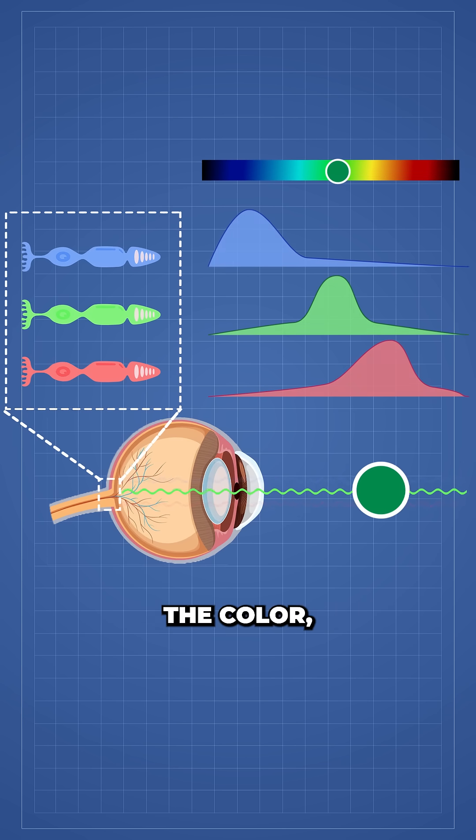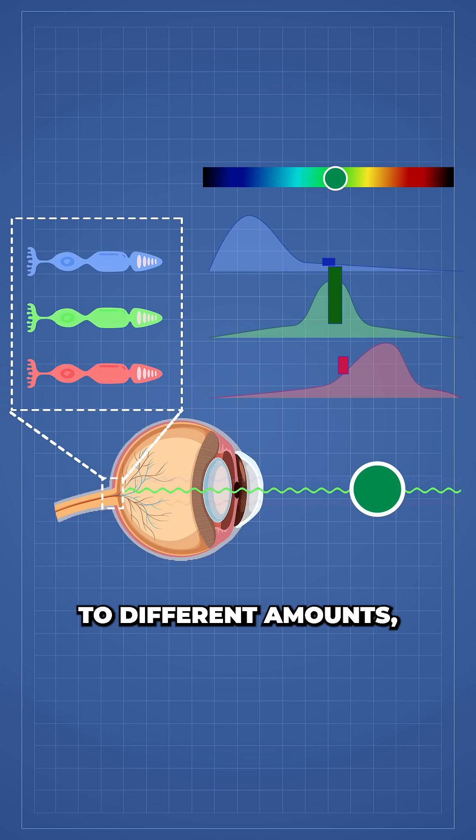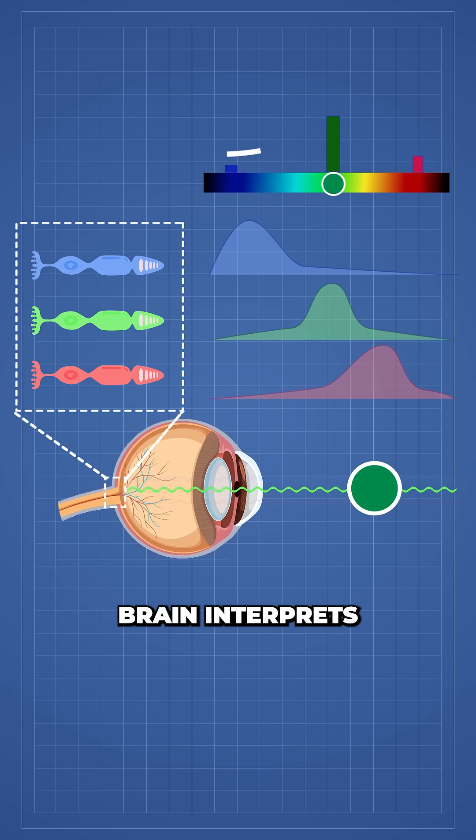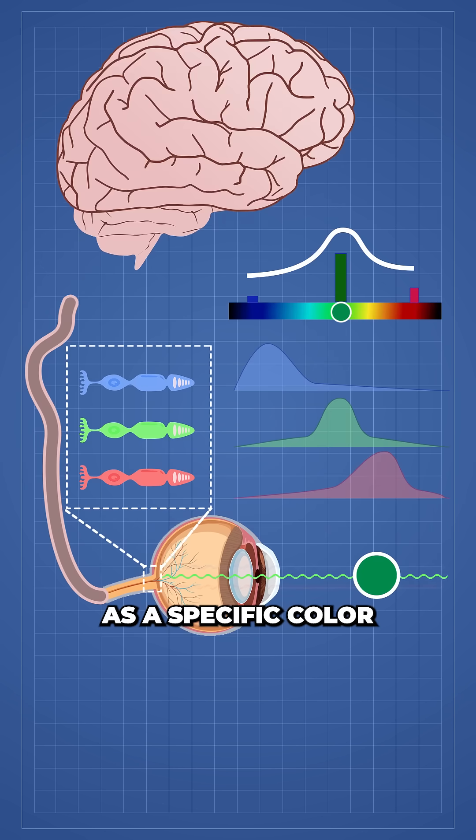When light then enters the eye, depending on the color, it stimulates all three cones to different amounts. And your brain interprets the ratios as a specific color that it is seeing.